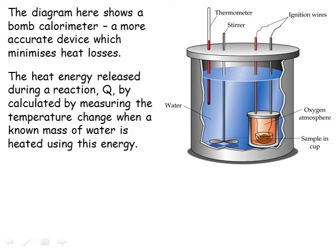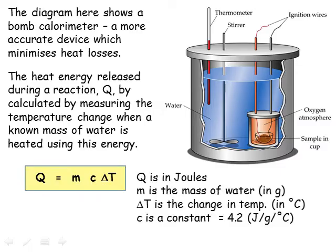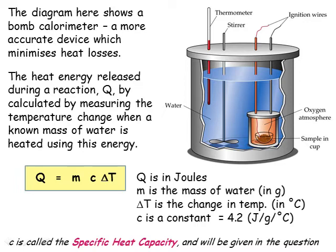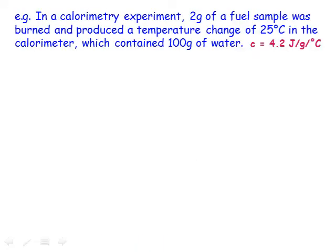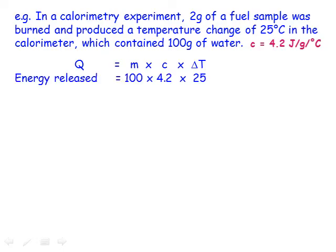We work out how much energy the water must have gained to raise its temperature by the measured amount using the equation Q = MCΔt, where Q is the amount of energy in joules, M is the mass of water heated by the reaction, and ΔT is the change in temperature. C is the specific heat capacity, given the value of 4.2 joules per gram per degree C. For example, if a calorimeter contains 100 grams of water and the temperature increased by 25 degrees C, the energy transferred equals 100 × 4.2 × 25 = 10,500 joules, or 10.5 kilojoules. Since we burnt 2 grams of fuel, the energy released was 5.25 kilojoules per gram.